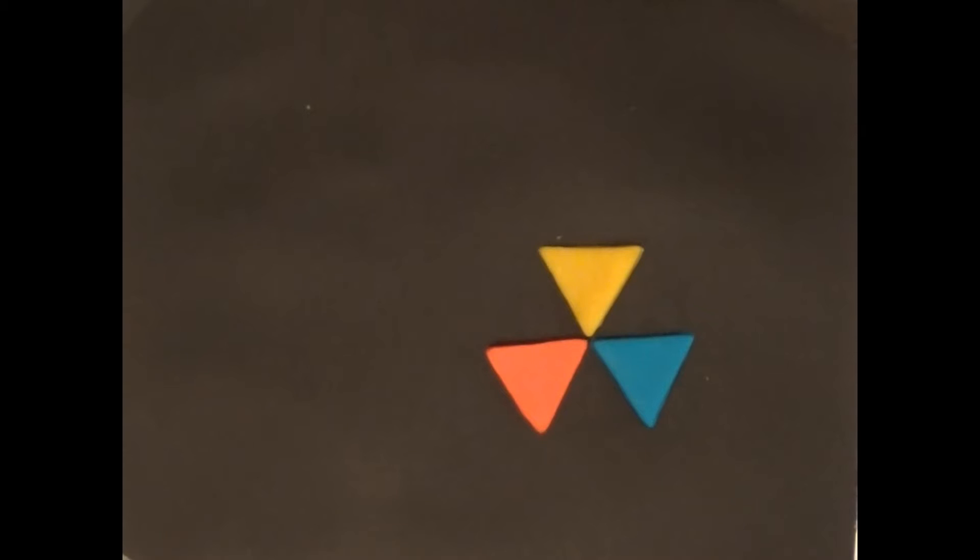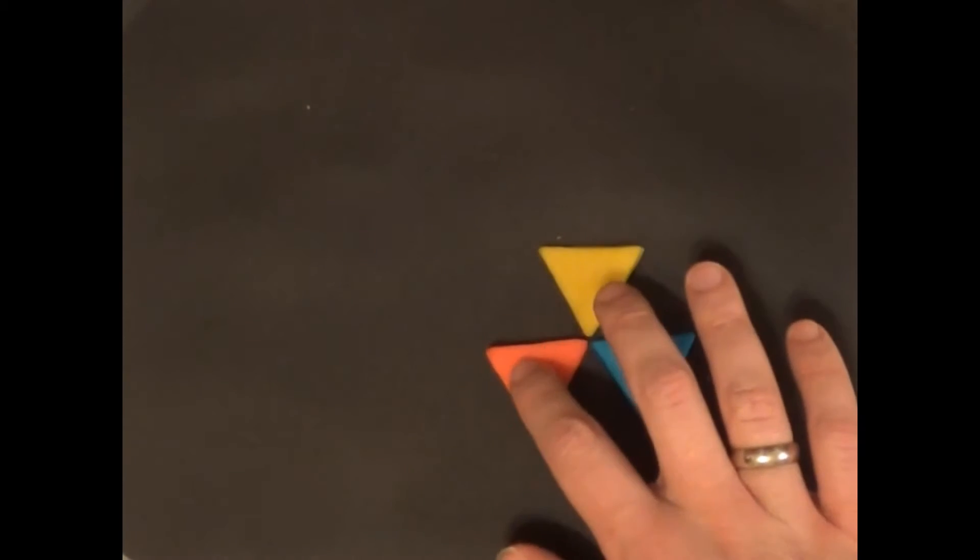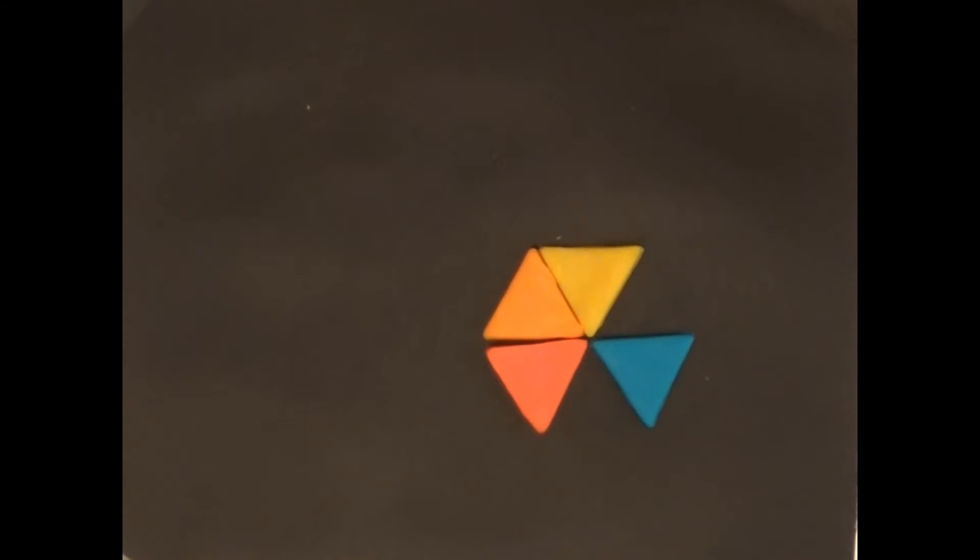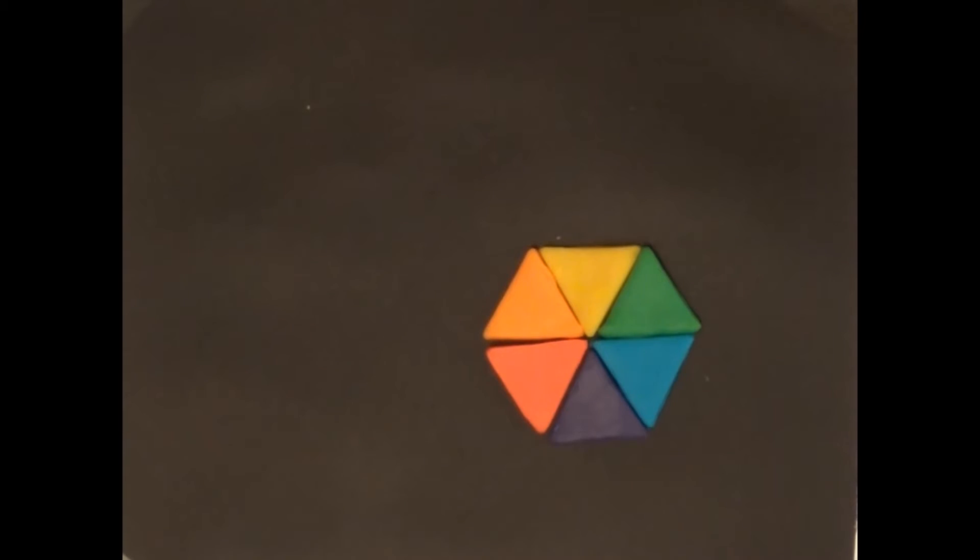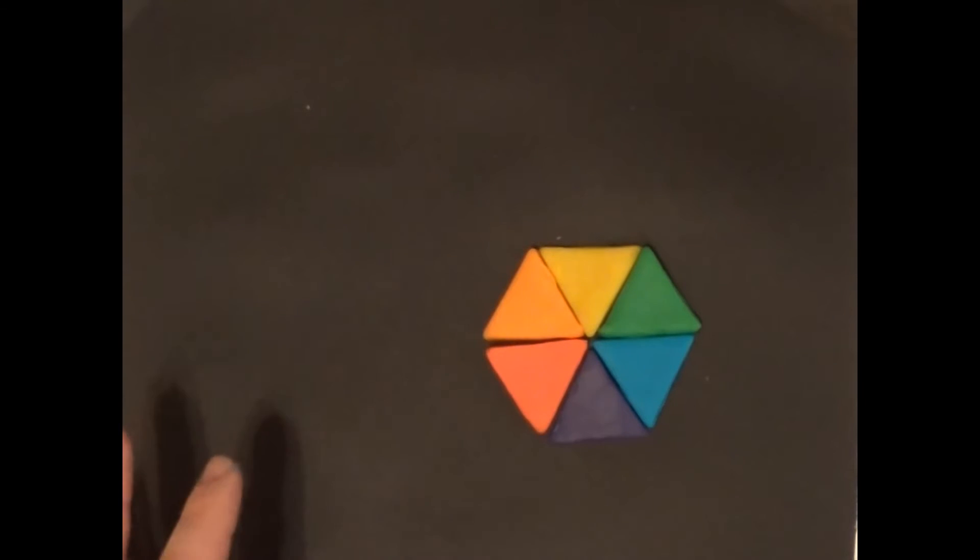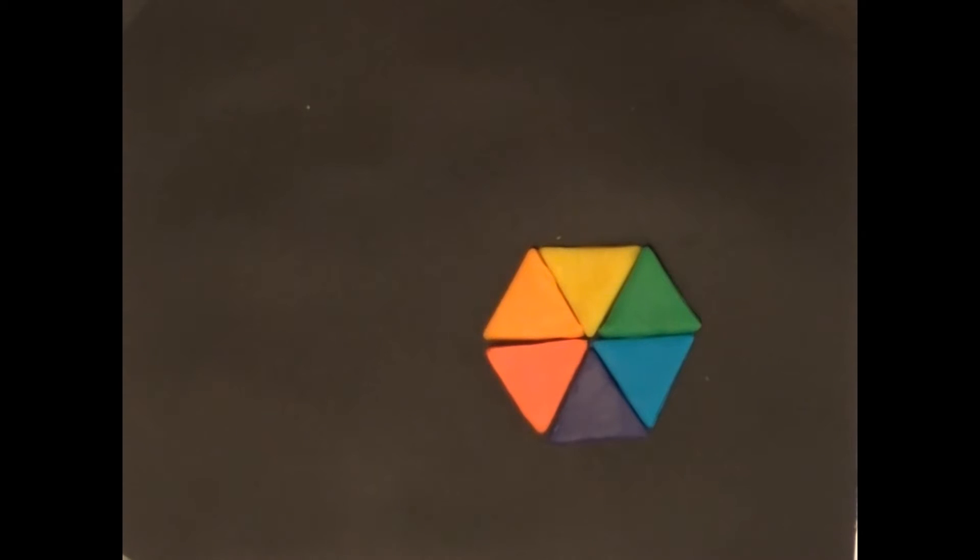So if we mix yellow and red, we get orange. And if we mix red and blue, we get purple. And if we mix blue and yellow, we get green. And this is our color wheel: we have yellow, orange, red, purple, blue, and green.